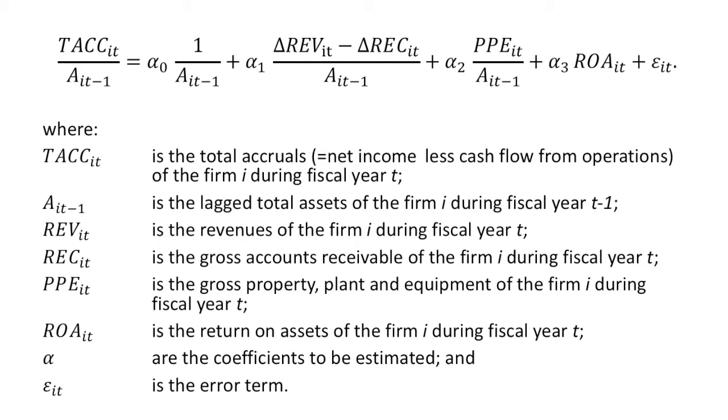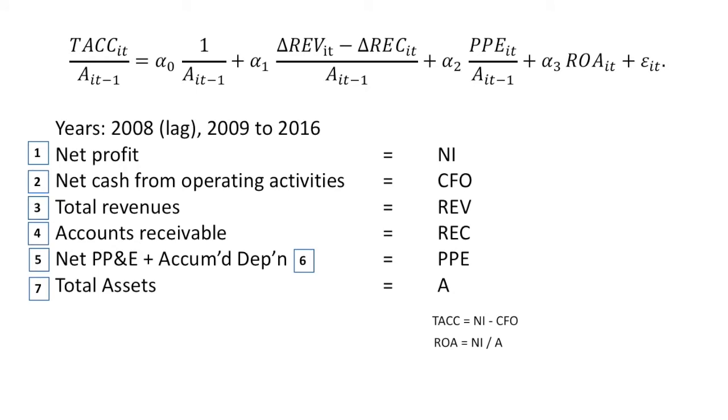Before we go to the SPSS software, we have to check our data. Assuming that we want to estimate the normal accruals of firms for eight years from 2009 to 2016, because we also need data for lagged assets as well as for revenues and receivables, we also require the data from the preceding year, 2008. This depends on how you want to define your variables, but here's how we will do it in the simplest possible way.